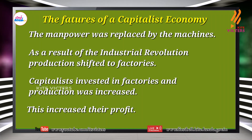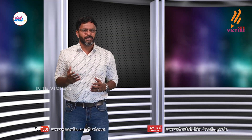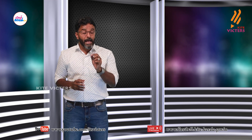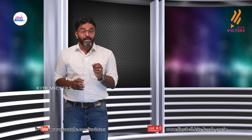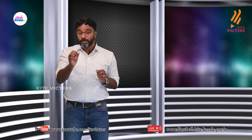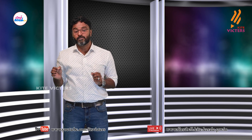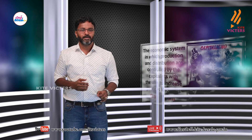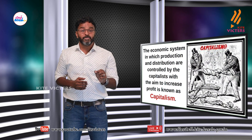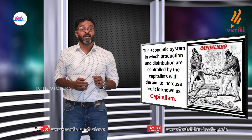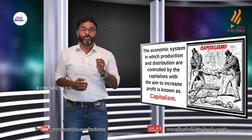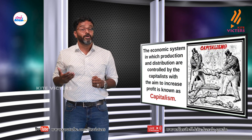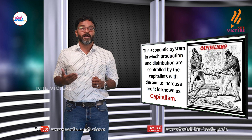These were the features of a capitalist economy. What is capitalism? Capitalism is an economic system where the production and distribution are controlled by the capitalist with the aim to increase profit.